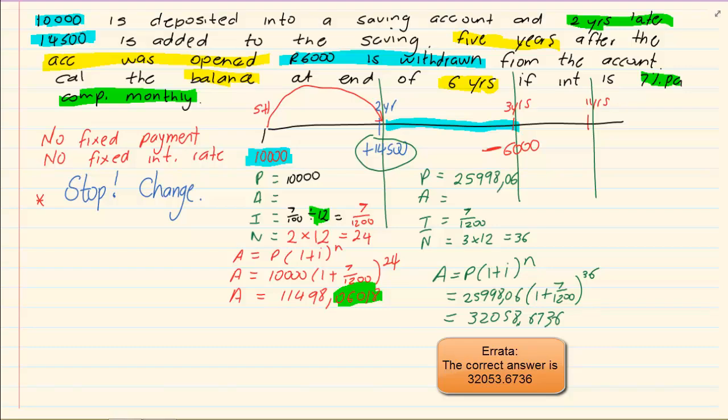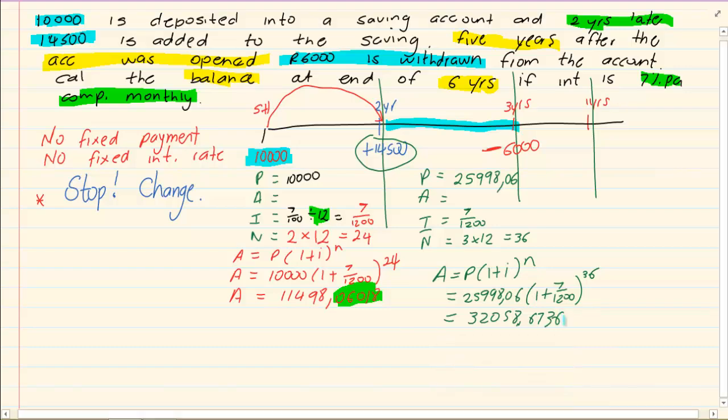Again notice that if you are not going to get into the habit of using your answer button, you would have to round off to much more. Now what's the next step? The next step they are telling us is that they have removed or taken out 6,000 Rand.